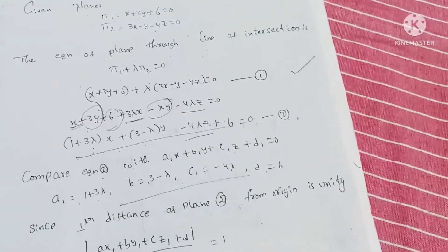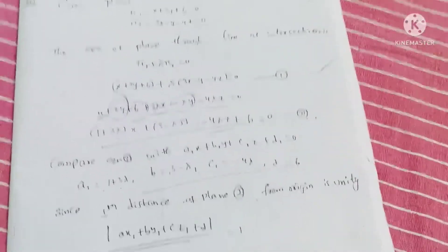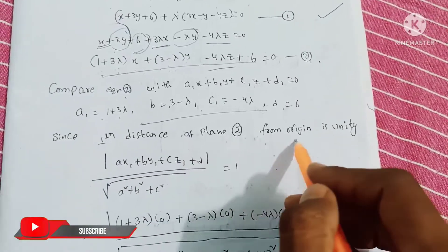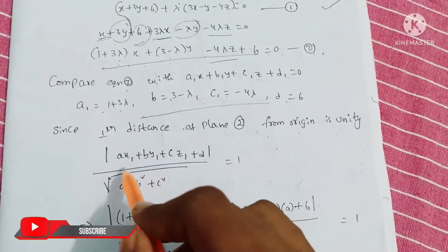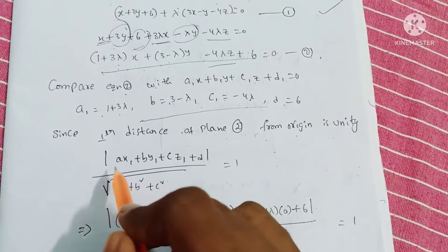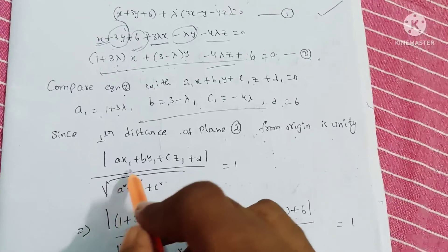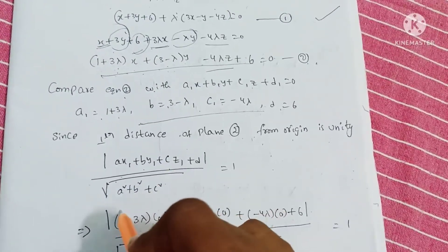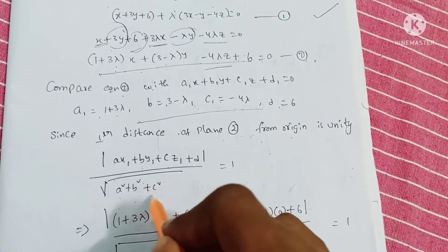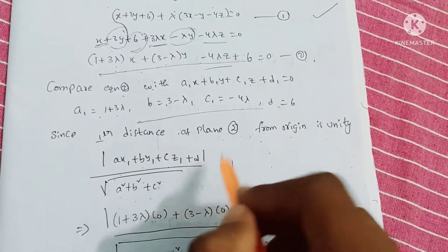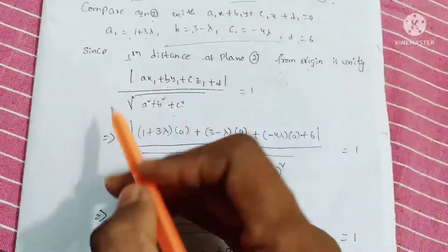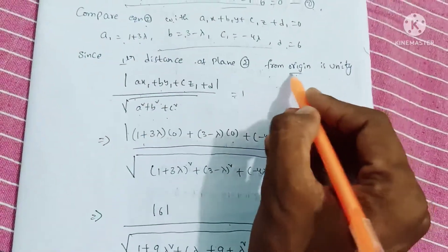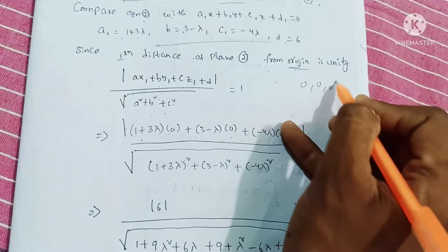We know the perpendicular distance formula. Since the perpendicular distance of the plane from the origin is unity, we apply the formula: modulus of (Ax1 plus By1 plus Cz1 plus D) divided by root over (A square plus B square plus C square) is equal to 1. The origin point is (0, 0, 0).